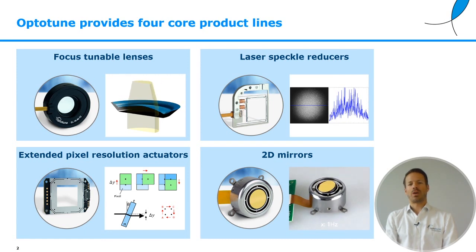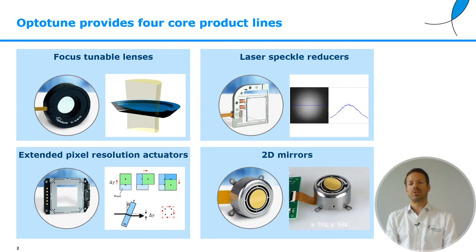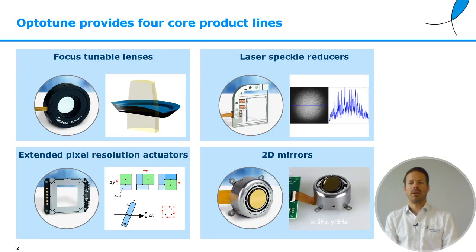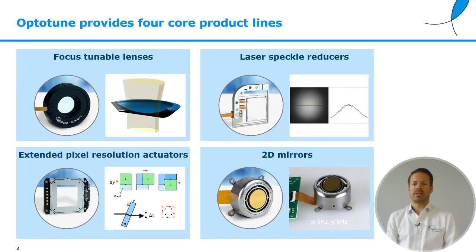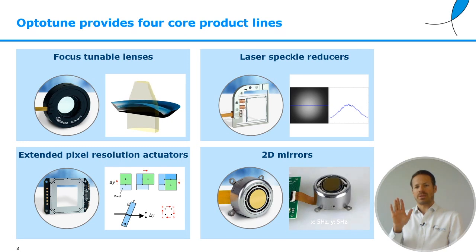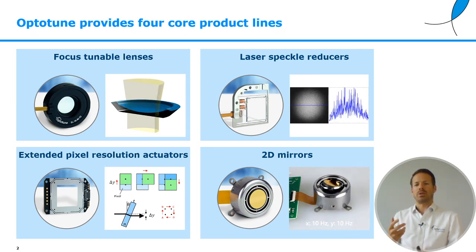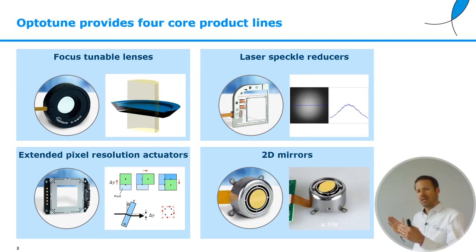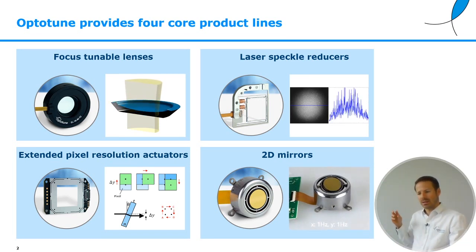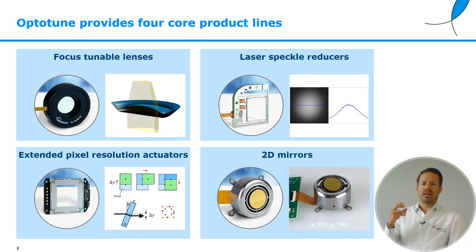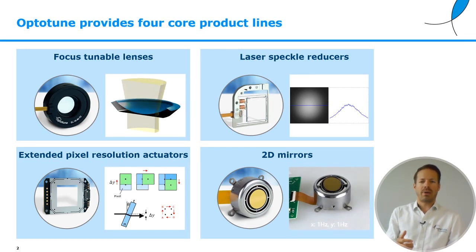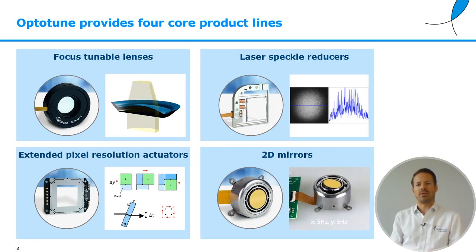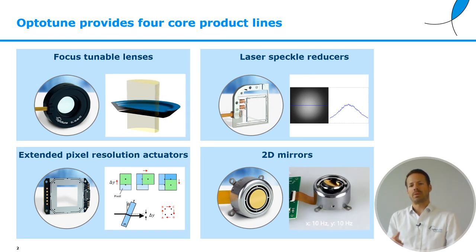Apart from tunable lenses, I'd like to introduce three other optomechanical components that OptiTune provides. Laser speckle reducers are essentially oscillating diffusers which can be used to reduce laser speckle — that's what you get on a white screen with a coherent laser: black interferences. This can be an annoyance to the eye or bad for resolution. By moving a diffuser quickly, you can average out those speckles over time.